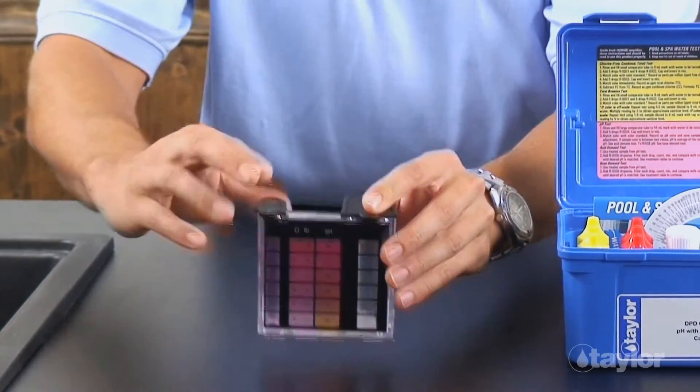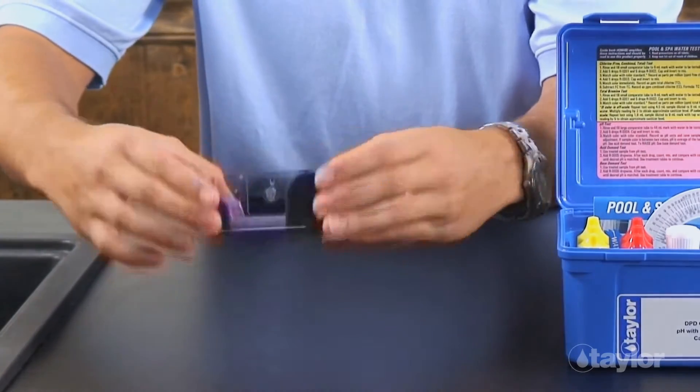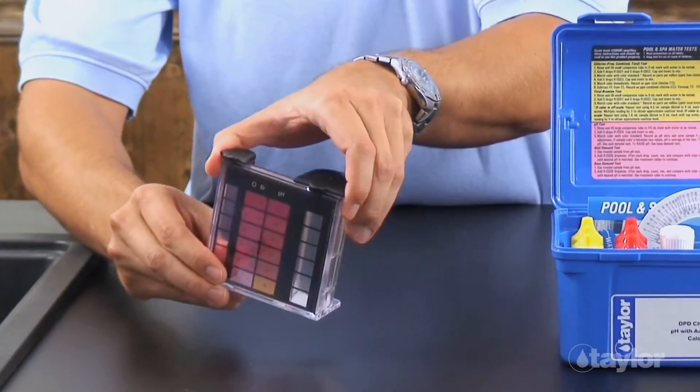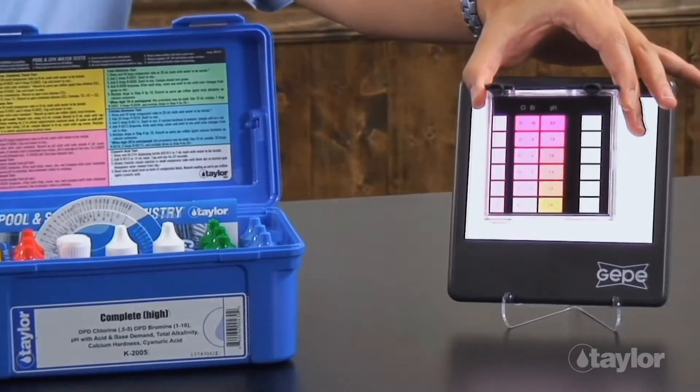Cap and invert to mix. Match the color with the color standard. Record as parts per million total bromine.